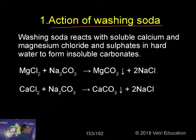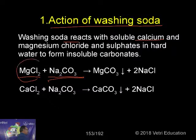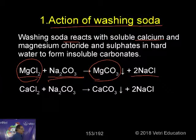By treating with washing soda — sodium carbonate — the hardness is removed. Washing soda reacts with soluble calcium and magnesium chloride and sulfate in hot water to form insoluble carbonates. Magnesium chloride, when treated with sodium carbonate, is converted into insoluble magnesium carbonate, and sodium chloride remains in solution. Magnesium carbonate comes out as a precipitate.